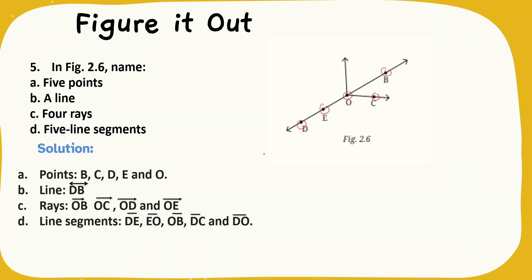Next, we need to mention a line. Line is DB. DB is a line. Next, four rays. Rays, if you consider O is the starting point, then OB is a ray and OC is a ray and EO is a ray and OE is a ray and OD is also a ray.